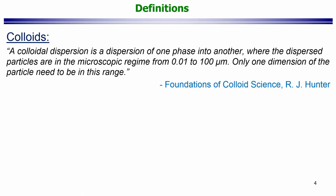We already saw the term colloids, so maybe we should define it at the very onset, as we will probably be using this term quite a bit. Colloid is short for colloidal dispersion. Colloidal dispersion is a dispersion of one phase into another where the dispersed particles are in the microscopic regime, from 0.01 (which is 10 nanometer) to 100 microns. This definition also states that only one dimension of the particle needs to be in this range. This is taken from Foundations of Colloid Science by R Hunter.